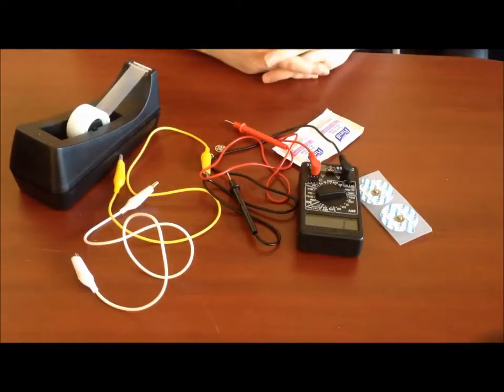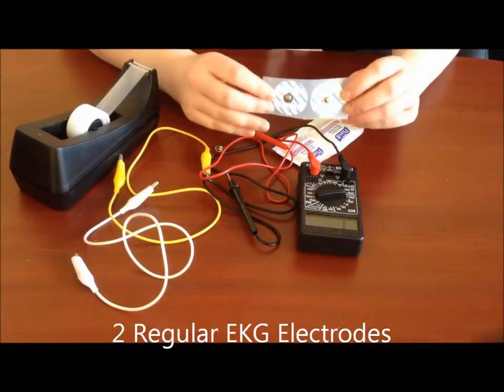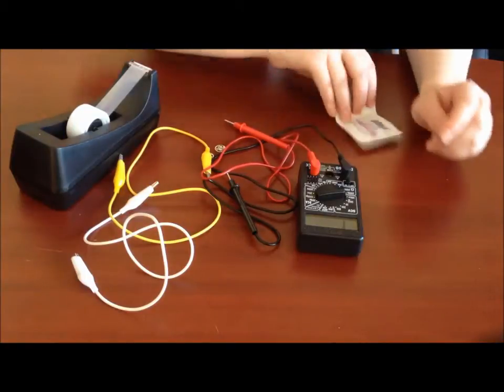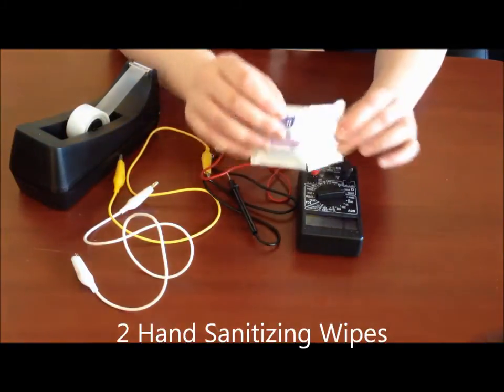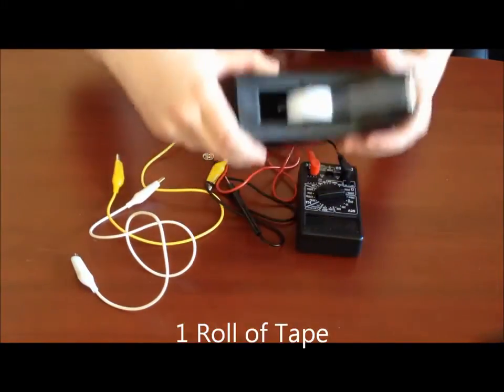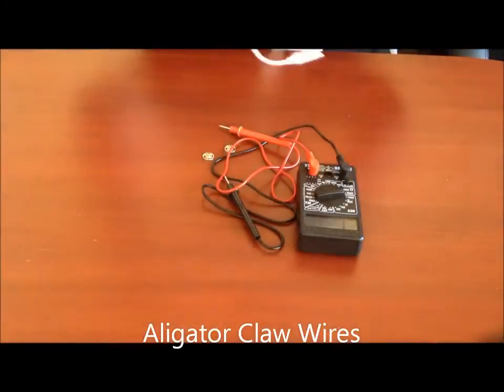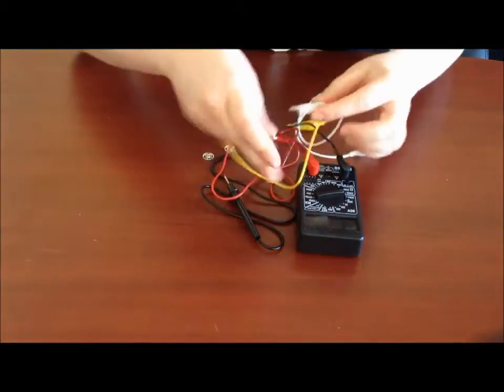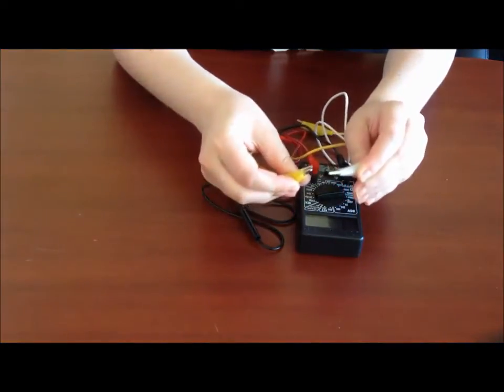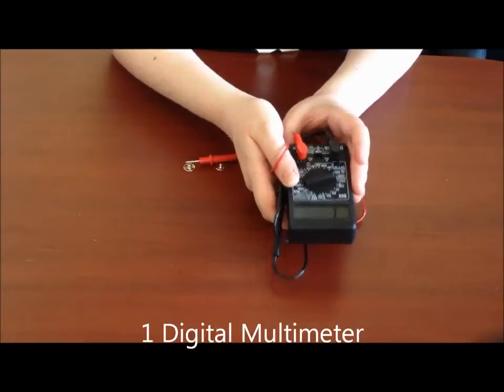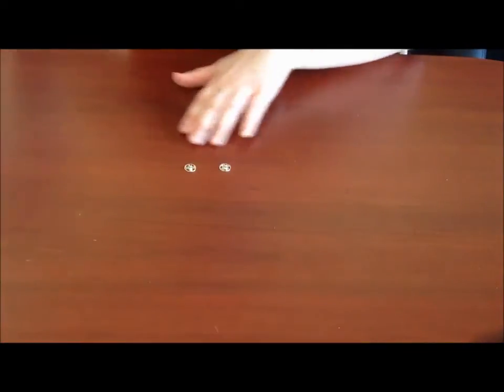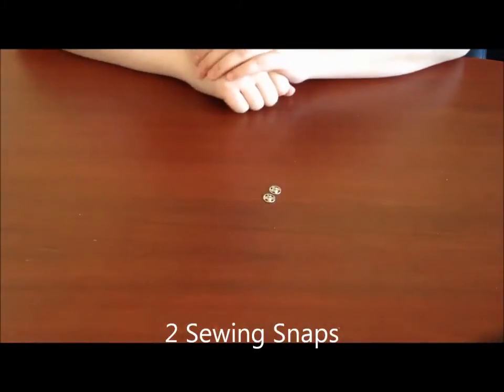So what you're going to need: you're going to need two regular EKG electrodes, two hand sanitizing wipes, some tape, two alligator claw wires, a digital multimeter, and two sewing snaps.